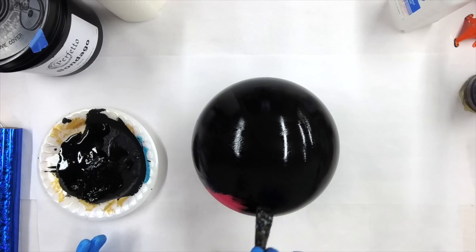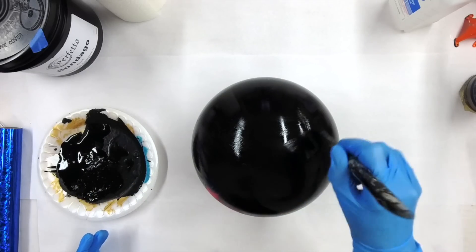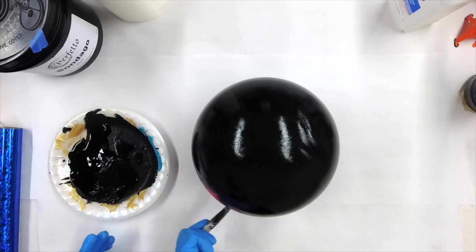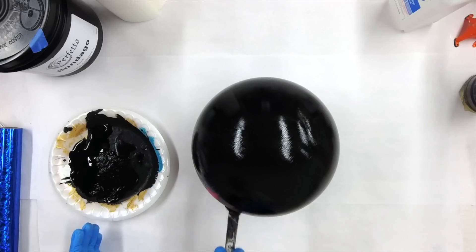But as I did with this bowling ball, you do want to make sure that you sand your surface, prep your surface, and make sure that you're giving the Bondego something good to adhere to.